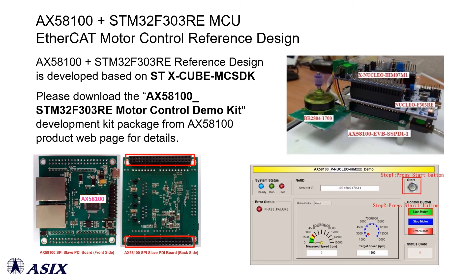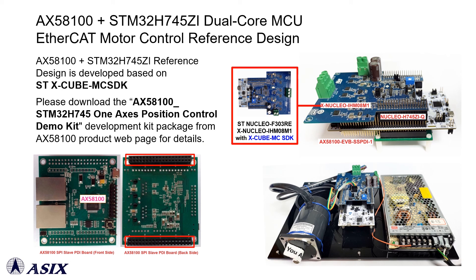ASIX offers a free AX58100 STM32F303RE MCU EtherCAT Slave motor control reference design package for designers to easily implement AX58100 on STM32F303RE MCU platforms. Additionally, a reference design is available targeting the STM32H745ZI dual-core MCU platform for EtherCAT Slave motor control applications.